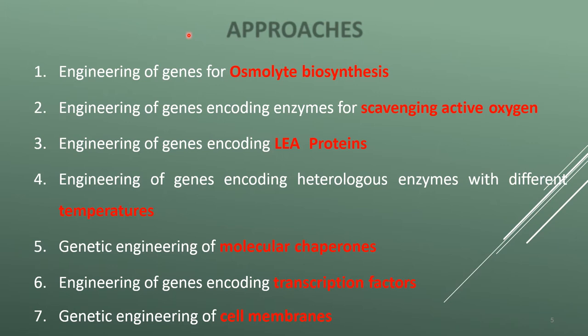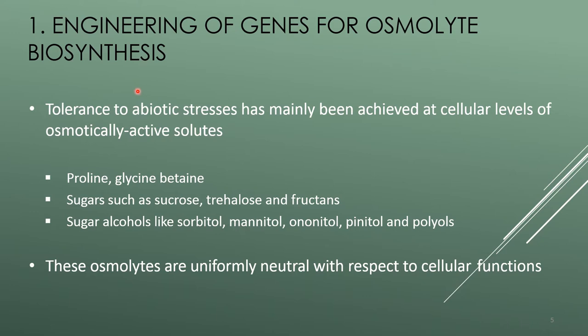There are seven approaches in genetic engineering which help in solving abiotic stress in plants. They are: engineering of genes for osmolite biosynthesis; engineering of genes encoding enzymes for scavenging active oxygen; engineering of genes encoding LEA proteins; engineering of genes encoding heterologous enzymes with different temperature optima; genetic engineering of molecular chaperones; engineering of genes encoding transcription factors; and genetic engineering of cell membranes.